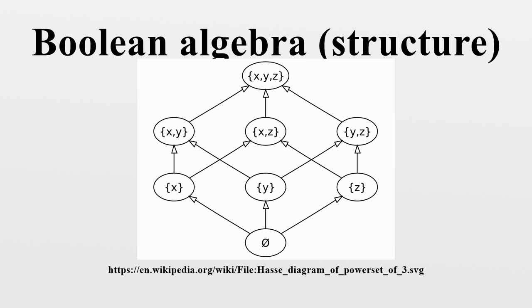In the 1960s, Paul Cohen, Dana Scott, and others found deep new results in mathematical logic and axiomatic set theory using offshoots of Boolean algebra, namely forcing and Boolean-valued models.